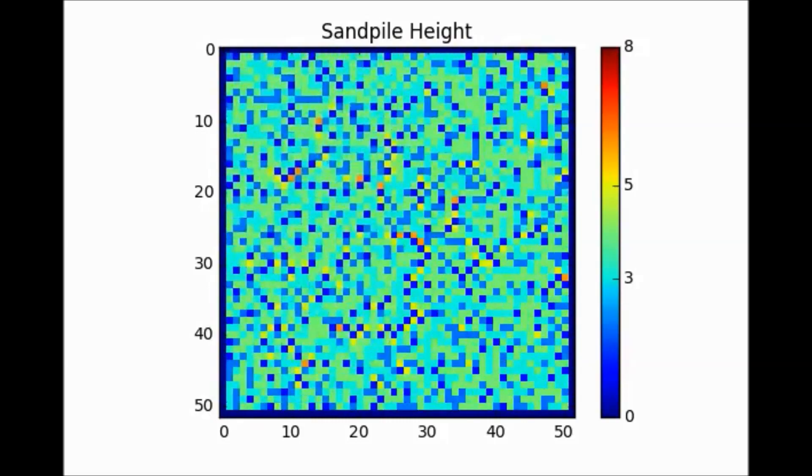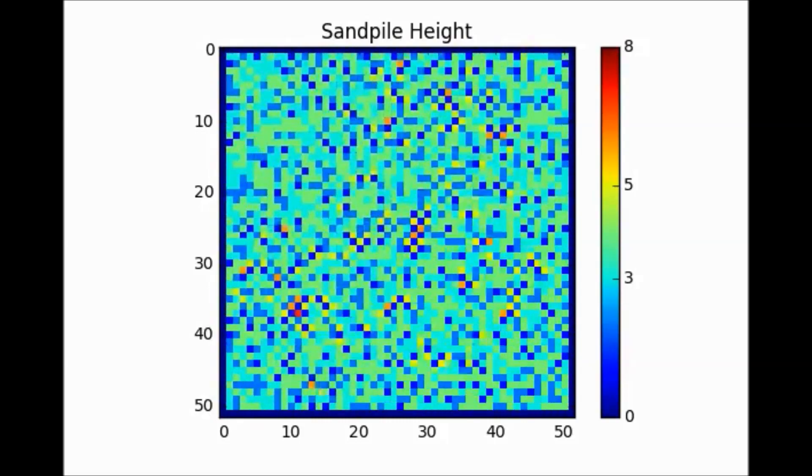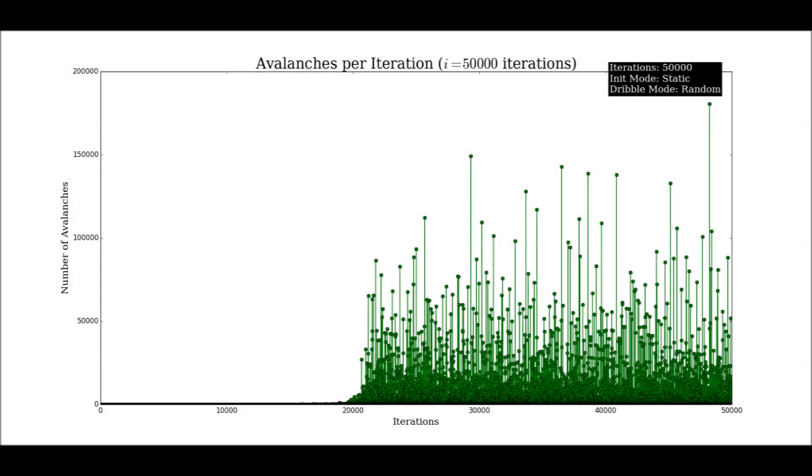As an output for my model, I plot avalanche size versus the number of iterations, which is equal to the number of grains we've added to the pile. We see that we reach the critical state where the size of the avalanches spans all length scales after we've added just over 20,000 grains to the pile.